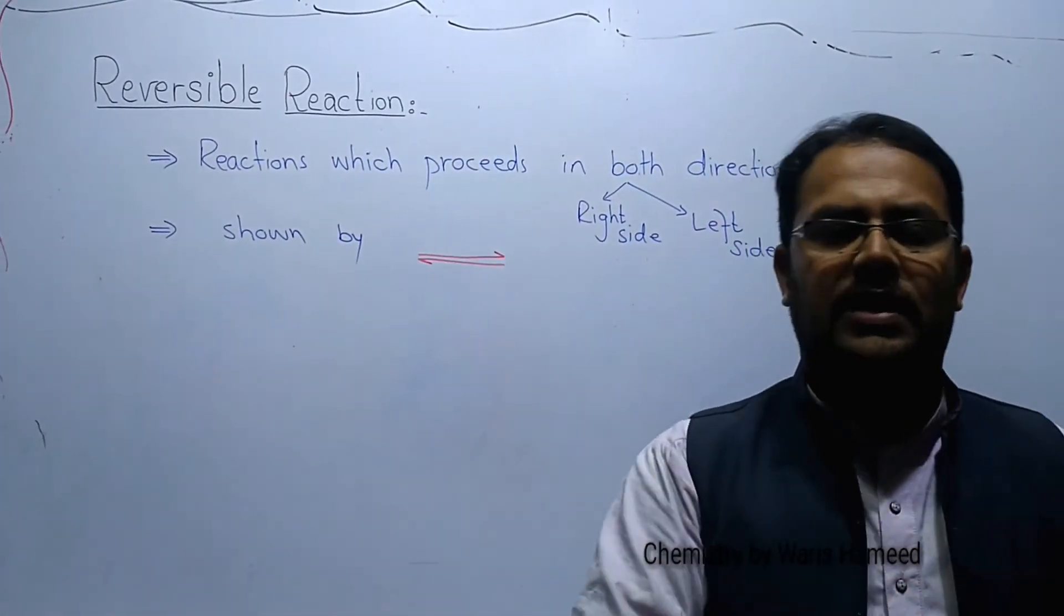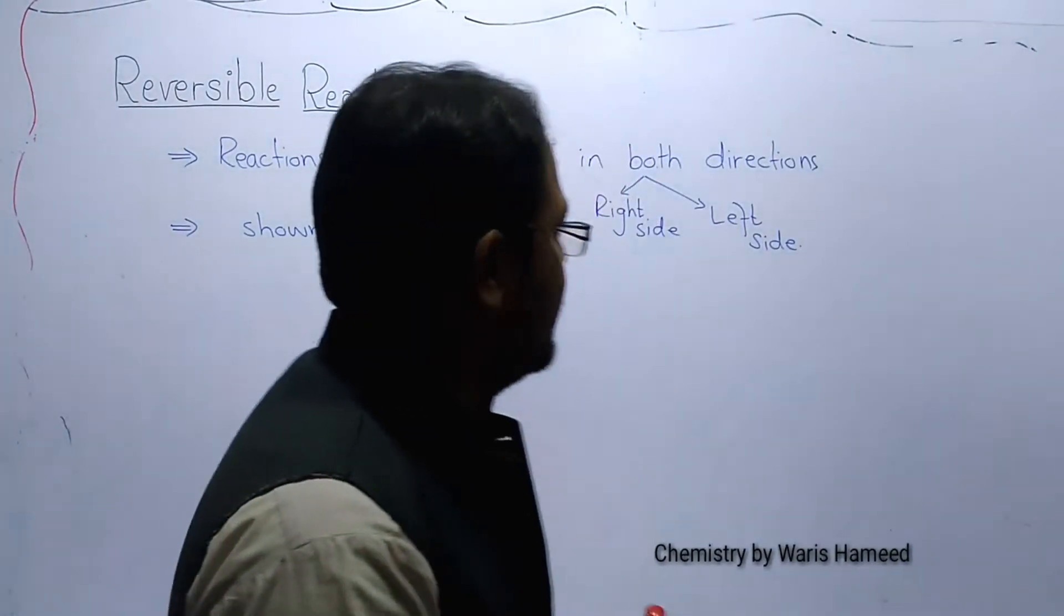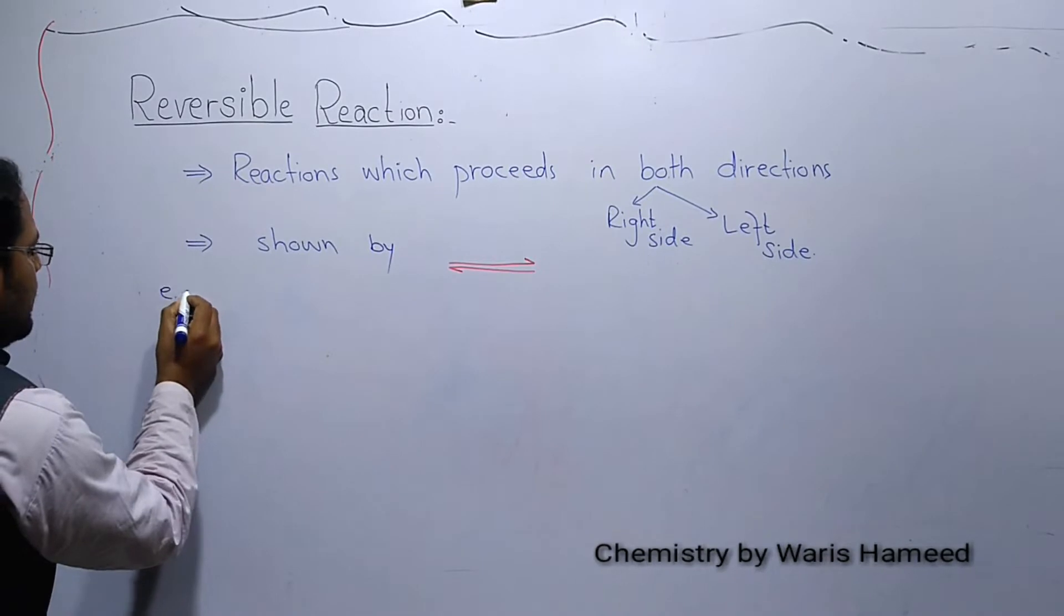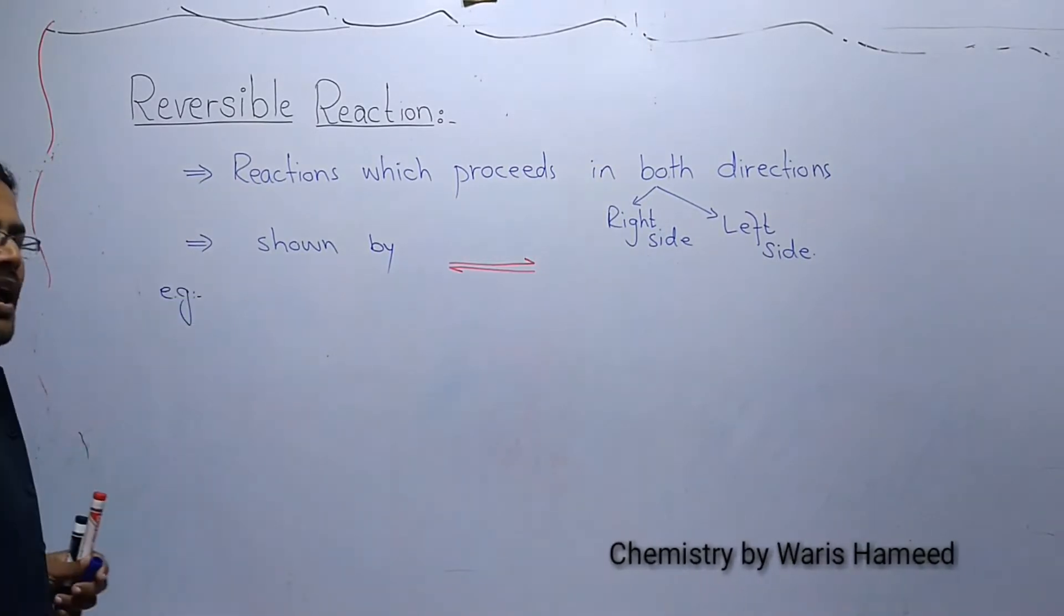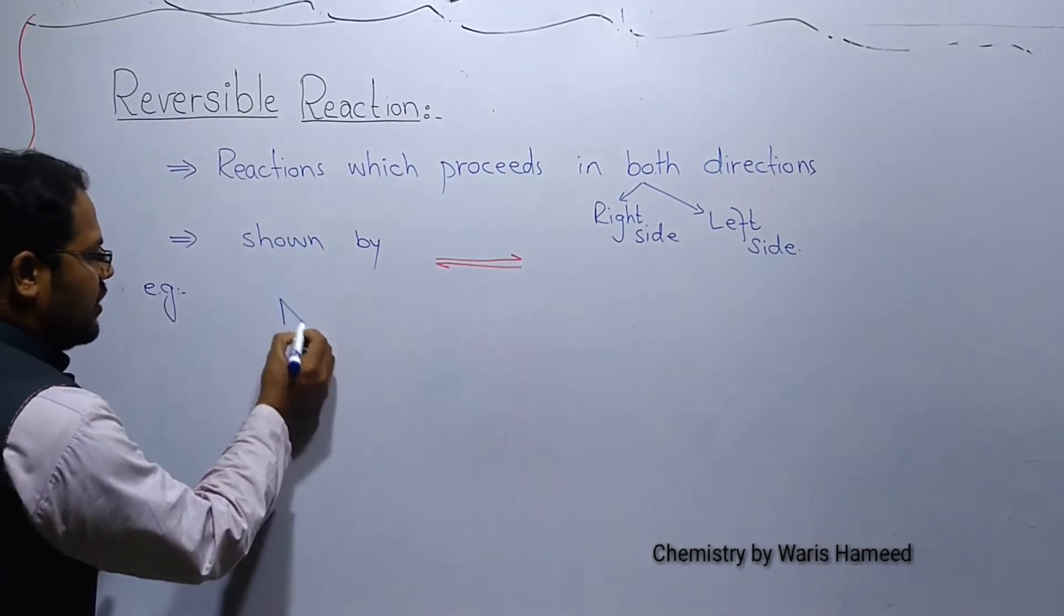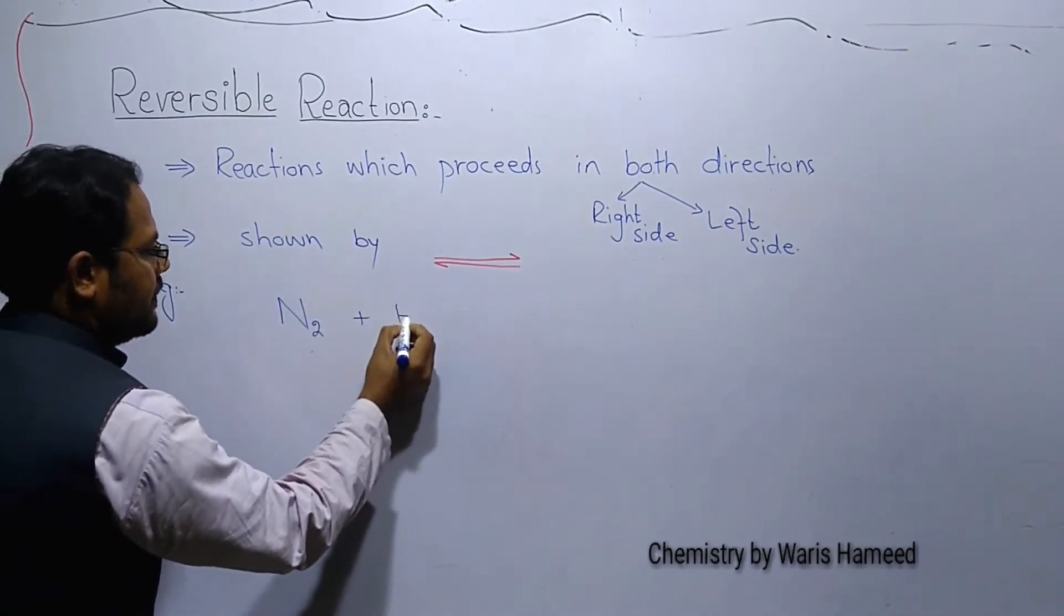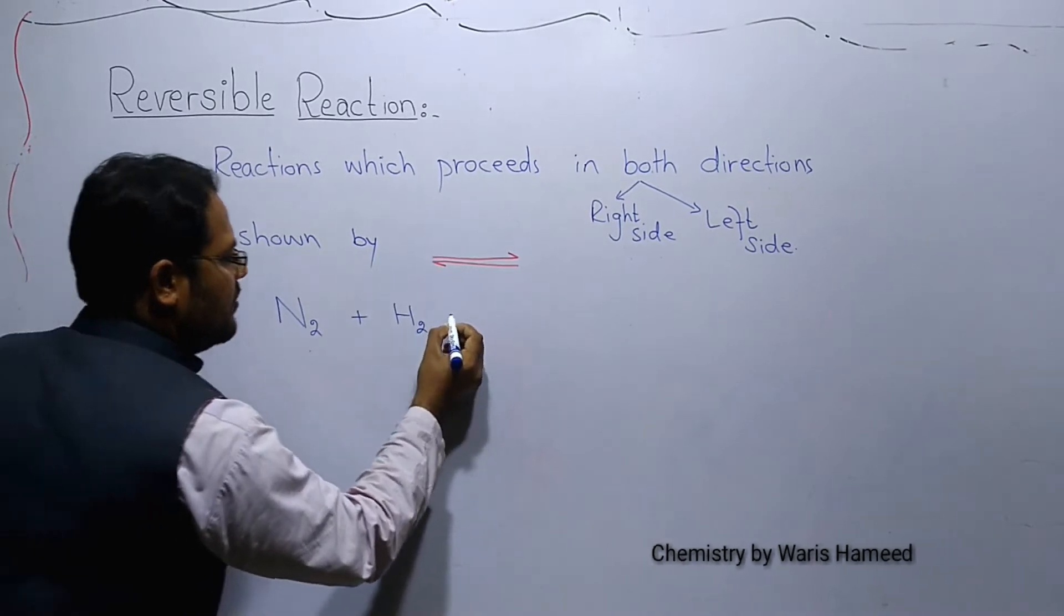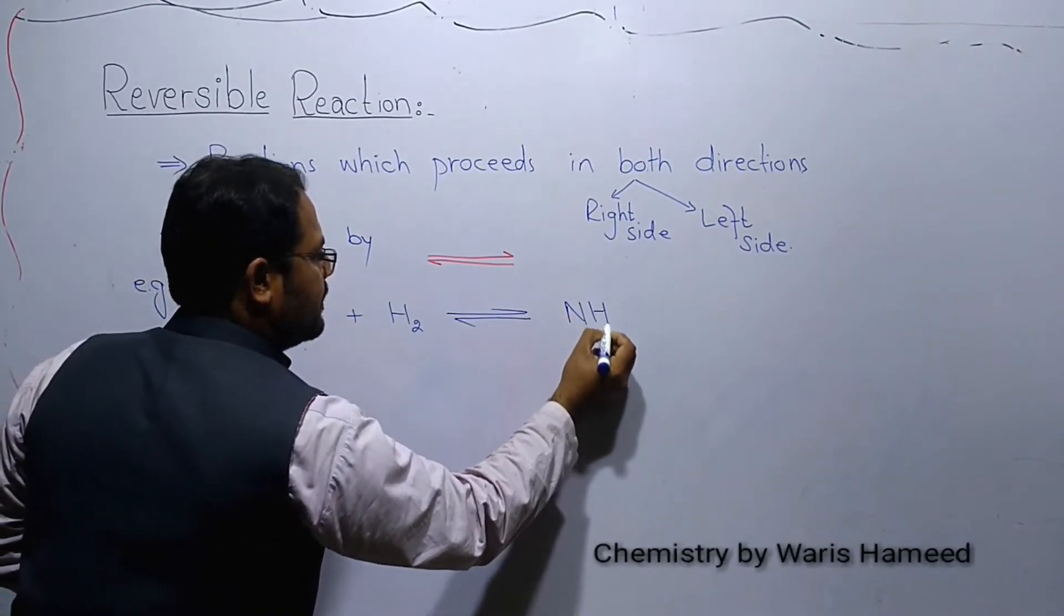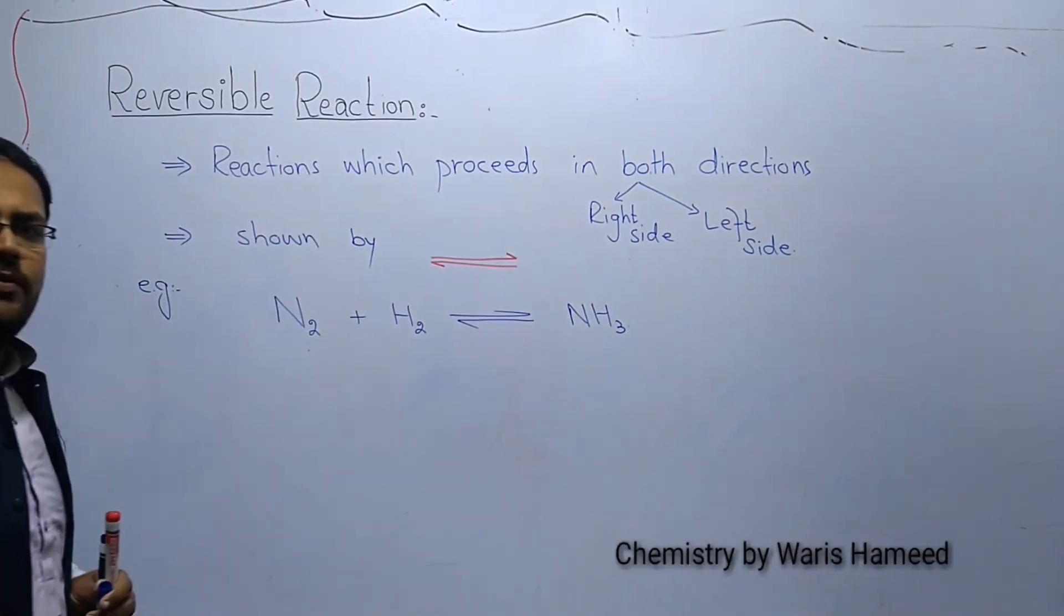For example, in the Haber process, nitrogen reacts with hydrogen and forms ammonia, NH3.